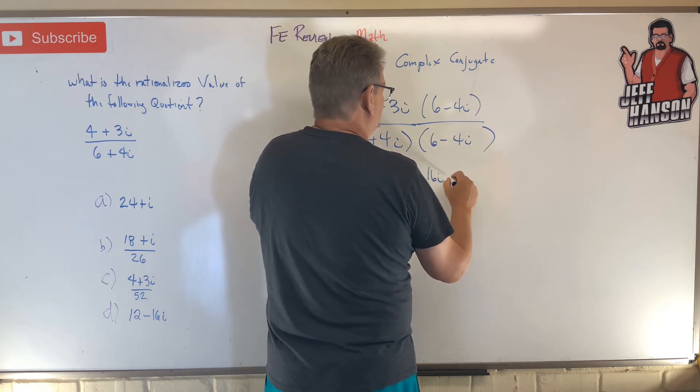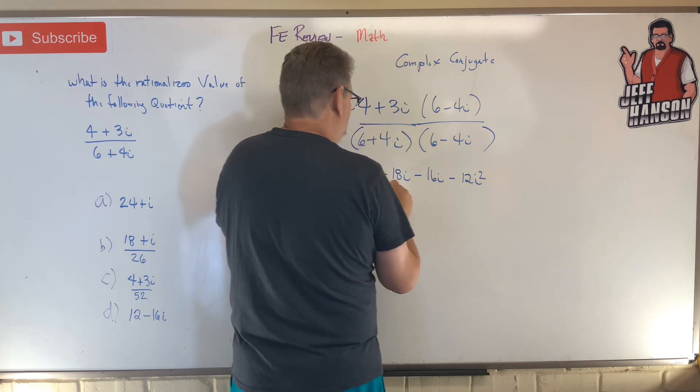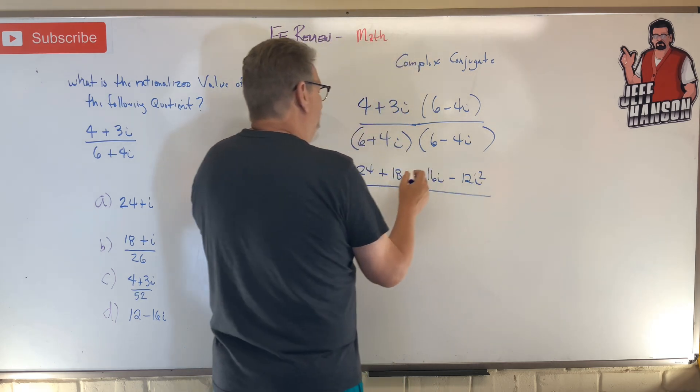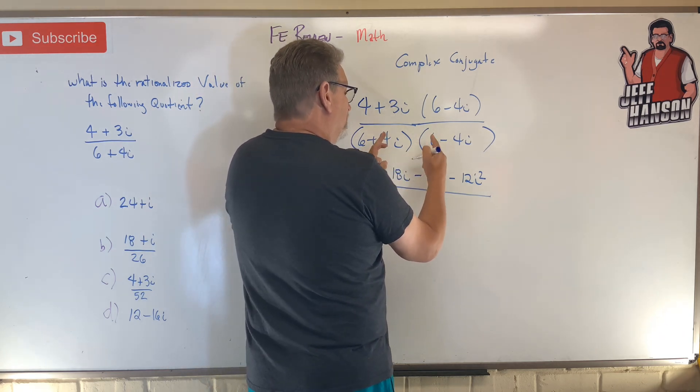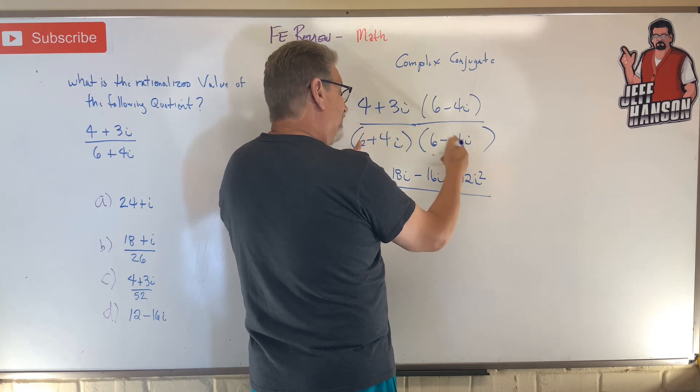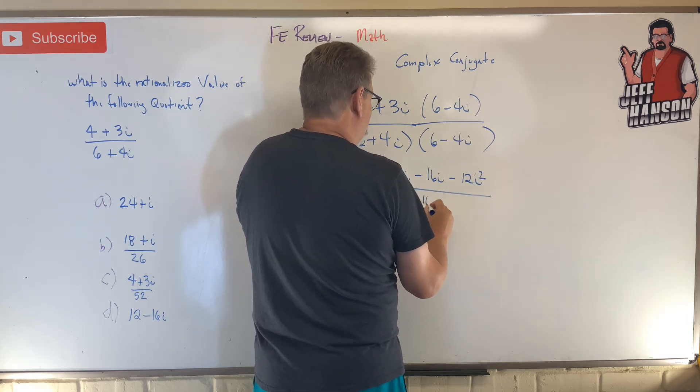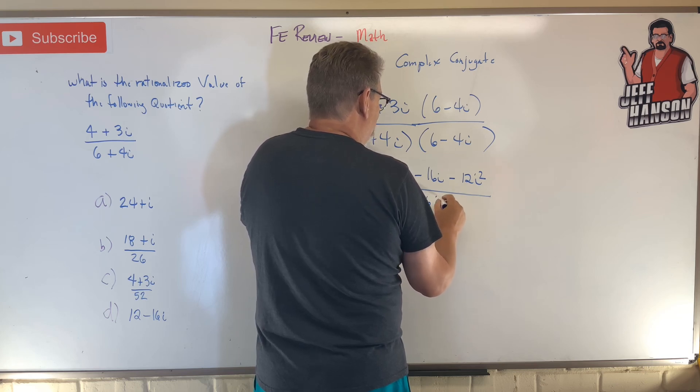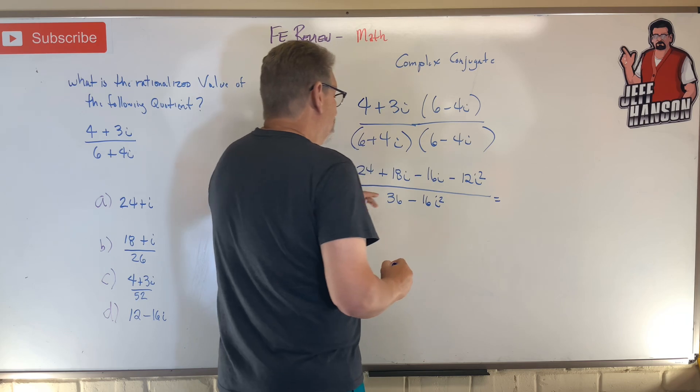Divided by, on the bottom, what do you get? 36, 6 times 6 inside, plus 24 outside, minus 24 that goes away, and then minus 16i squared. Okay, so how does that help?